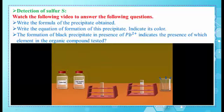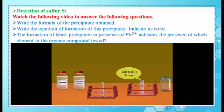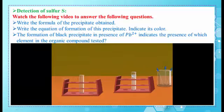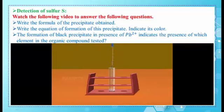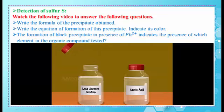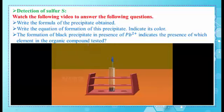For sulfur detection, we require: acetic acid, lead acetate solution, test tube, Lassaigne's extract, and droppers. Take a small amount of Lassaigne's extract using a dropper and pour it into a clean test tube. Using another dropper, take a small quantity of acetic acid and add it into the test tube containing Lassaigne's extract. Take a small amount of lead acetate solution using another dropper and add a few drops into the contents of the test tube. Sodium sulfide formed during the preparation of Lassaigne's extract reacts with lead acetate and forms a black precipitate of lead sulfide.